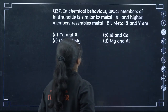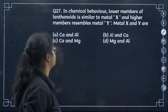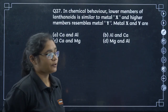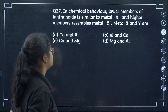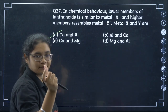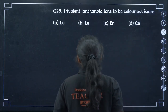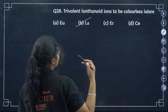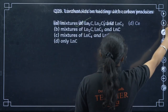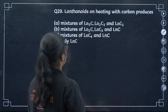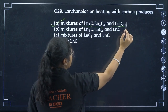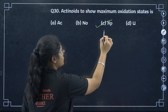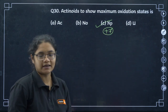In chemical behaviour, lower members of lanthanoids are similar to calcium and higher members resemble aluminium — so metal X is calcium and metal Y is aluminium. The trivalent lanthanide ion that is colourless is La3+ — option B. Lanthanides on heating with carbon produce Ln3C, Ln2C3, and LnC2. Among actinoids, the element showing the maximum oxidation state of +7 is neptunium (Np).